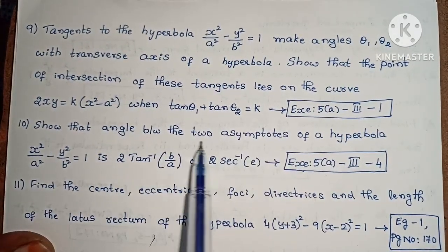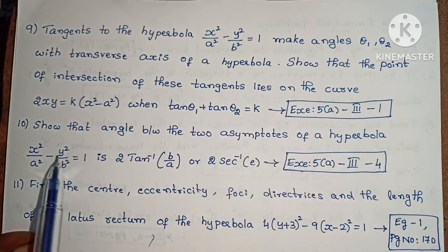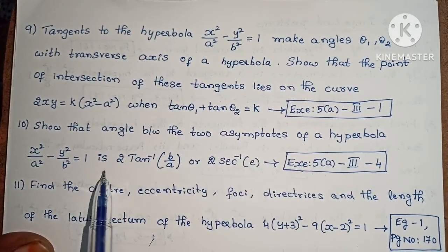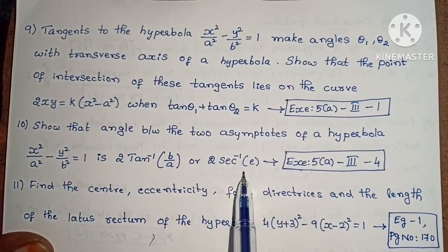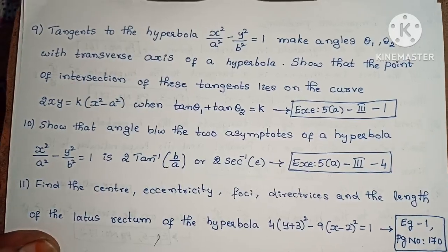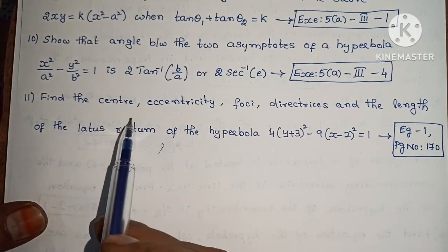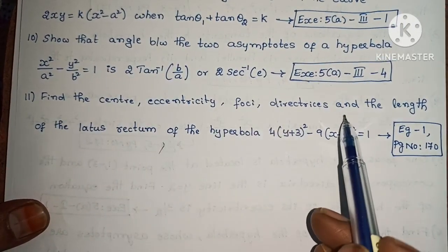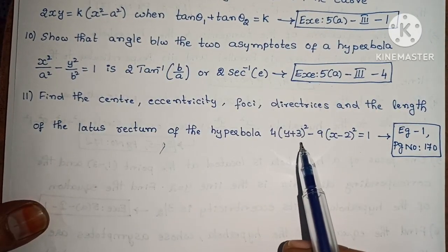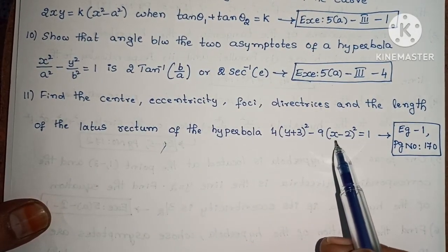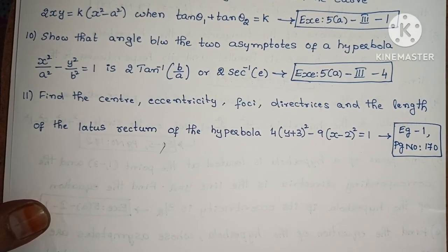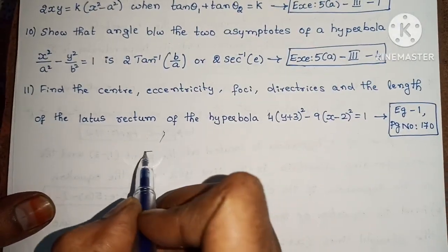Next, show that the angle between the two asymptotes of a hyperbola x²/a² − y²/b² = 1 is 2tan⁻¹(b/a) or 2sec⁻¹(e). Exercise 5(a), Roman numeral III, problem 4. Next, find the center, eccentricity, foci, directrices, and the length of the latus rectum of the hyperbola 4(y + 3)² − 9(x − 2)² = 1. Example 1, page number 170.